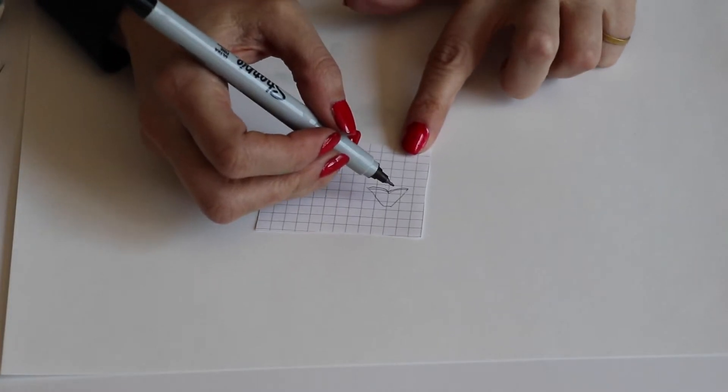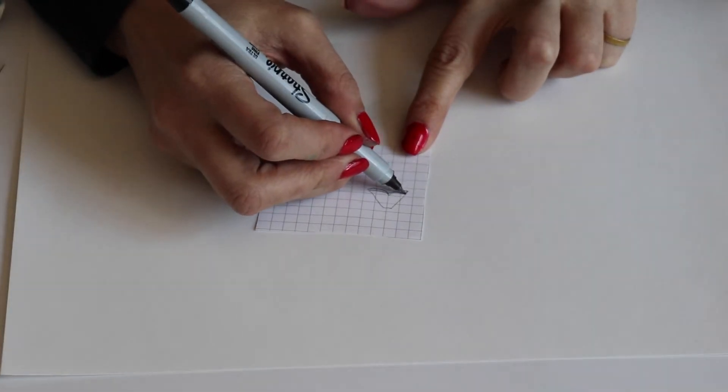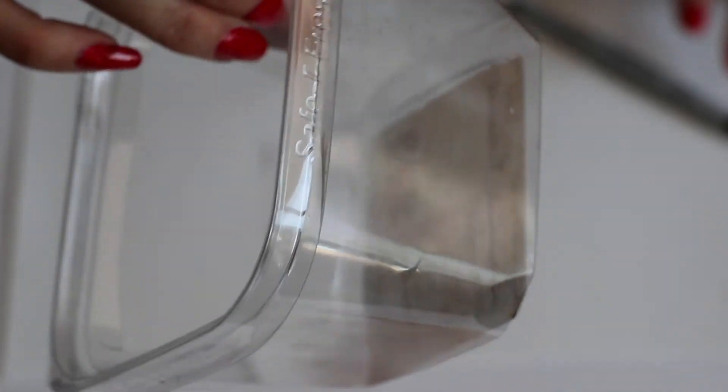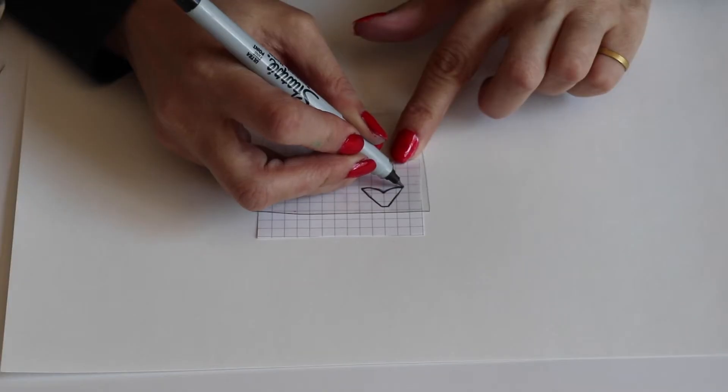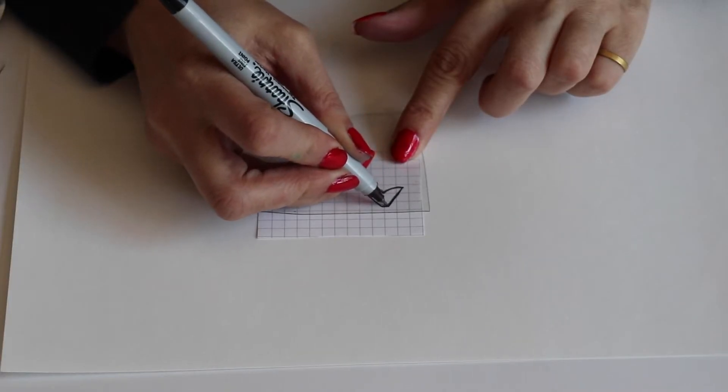To make the wings, draw a pointy heart shape on paper. Cut some clear plastic from a food container. Trace the wings using a black permanent marker.